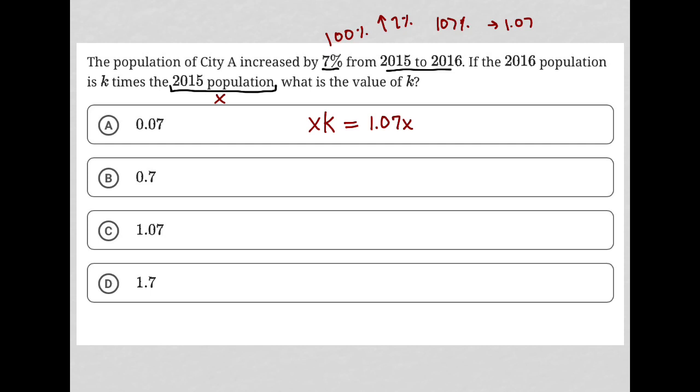Well, on both sides of this equation, I have an X already. Therefore, K must be the 1.07. So my correct answer here is choice C.